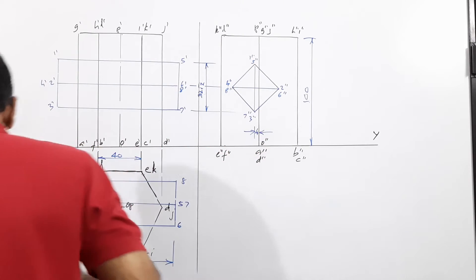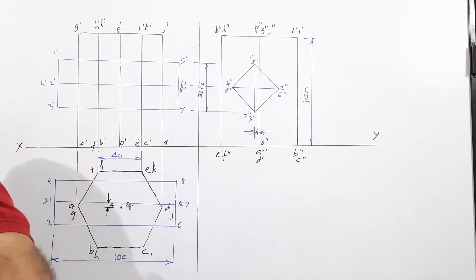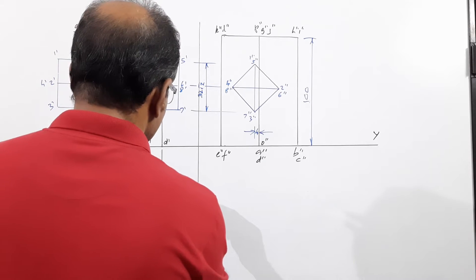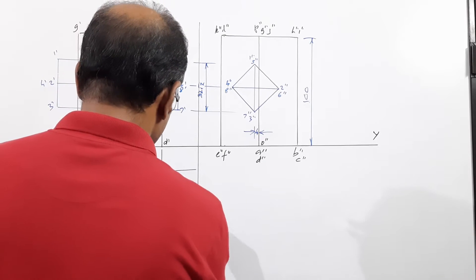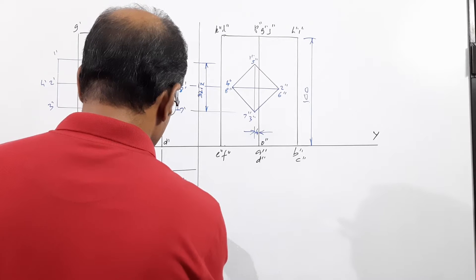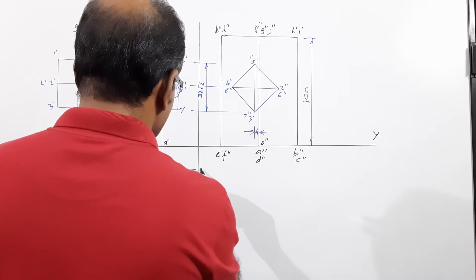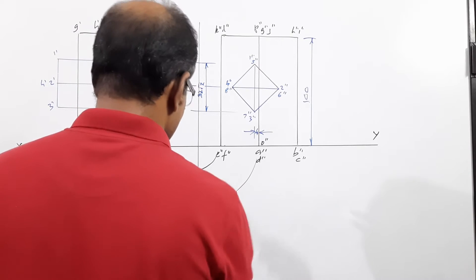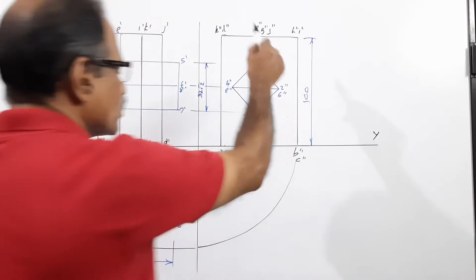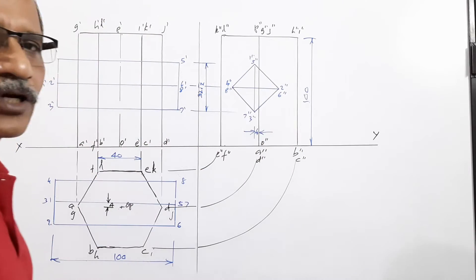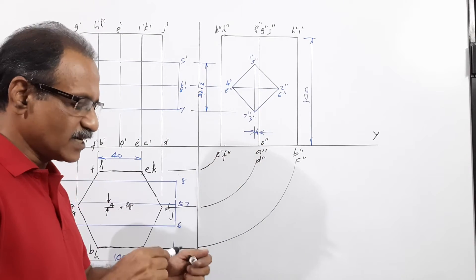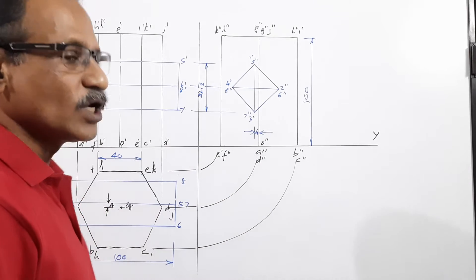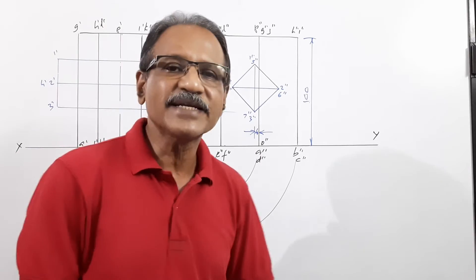For the end view procedure, draw an auxiliary projection line, project the points, draw arcs, and draw the end view. We use 'w-dash' letters to represent the end view (NV). Now this hexagonal prism is penetrated by a horizontal square prism of 30 mm side.